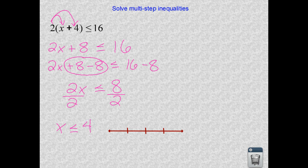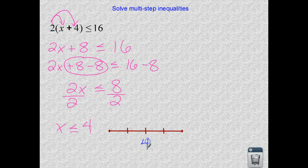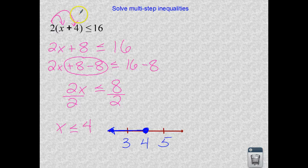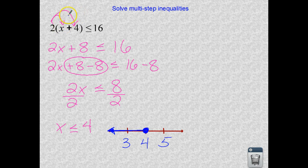4 is the number in question. Put that right in the middle, 3 to the left, 5 to the right. Check out your symbol. It has an equal sign below it, so we know that 4 is included in the answer, so that is a shaded in circle. And all numbers that are less than 4, which are the numbers to the left. Let's darken that arrow, and there is your solution. All of the numbers that are less than or equal to 4 will work when we substitute those values in here for x.